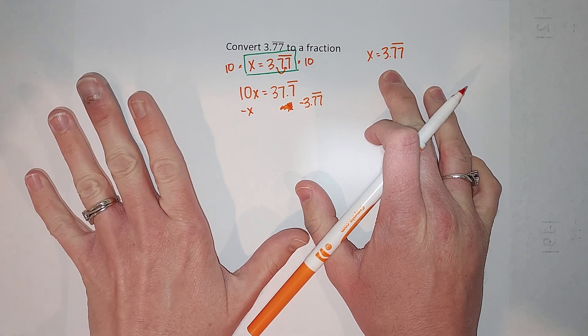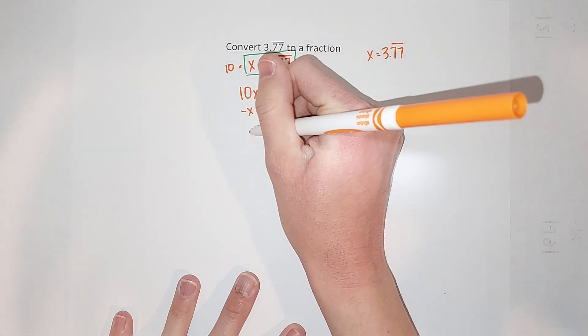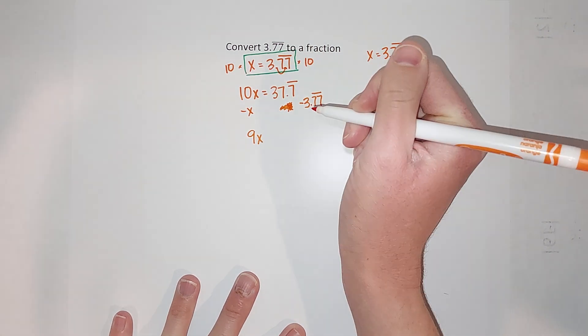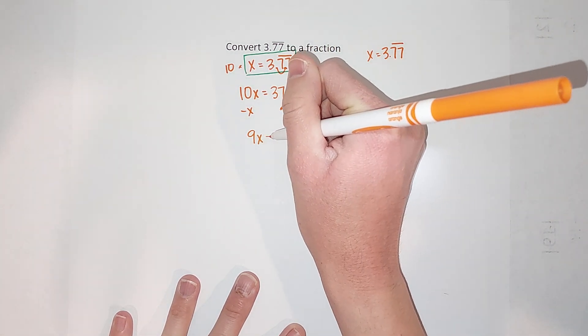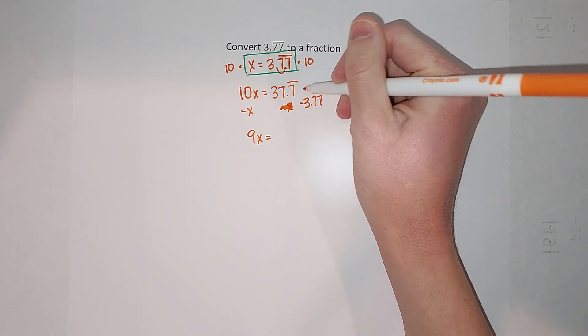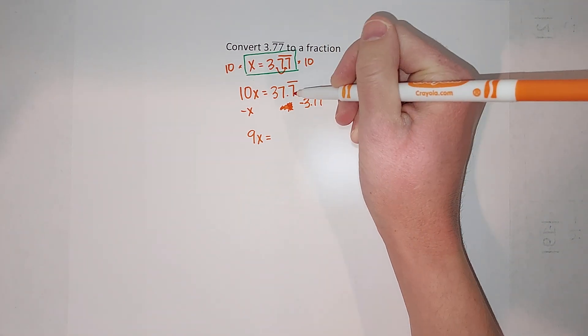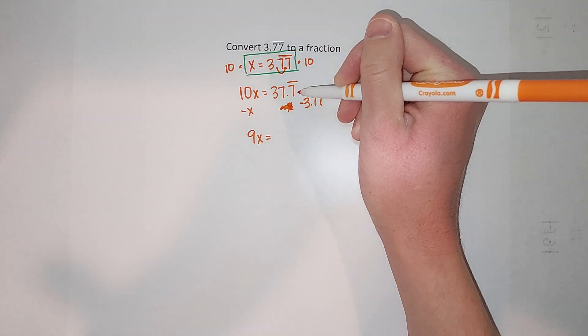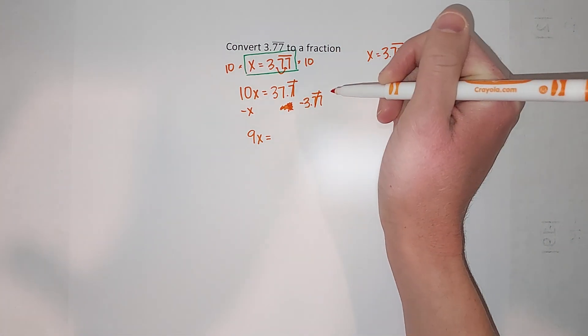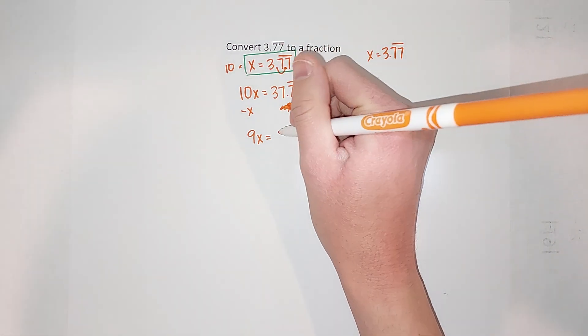So now I'm going to do that subtraction. 10x minus x gives me 9x, and that is equal to 37.7 repeating minus 3.7 repeating. Now I could write another 7 here—the 7 keeps going so it doesn't matter if I wrote 1 or 2—but my 7 repeatings are gone, they're subtracted. So we're left with 37 minus 3 which gives me 34.